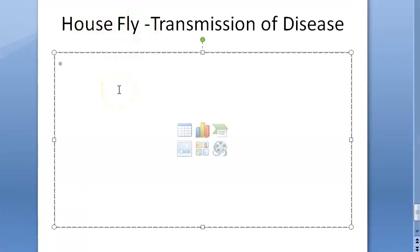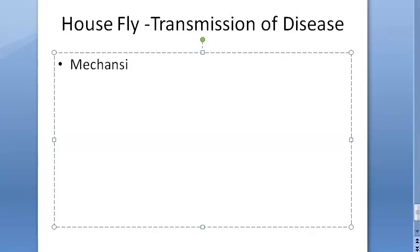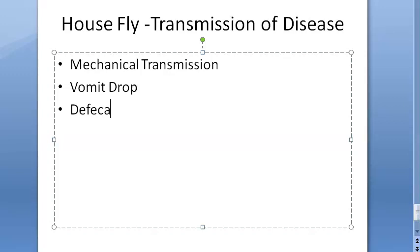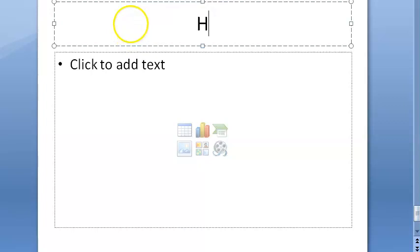House flies transmit disease as mechanical vectors. They do not support any cycle of the disease-causing agent within their body - it is purely mechanical transmission. The vomit drop and defecation are the main routes by which they spread diseases.